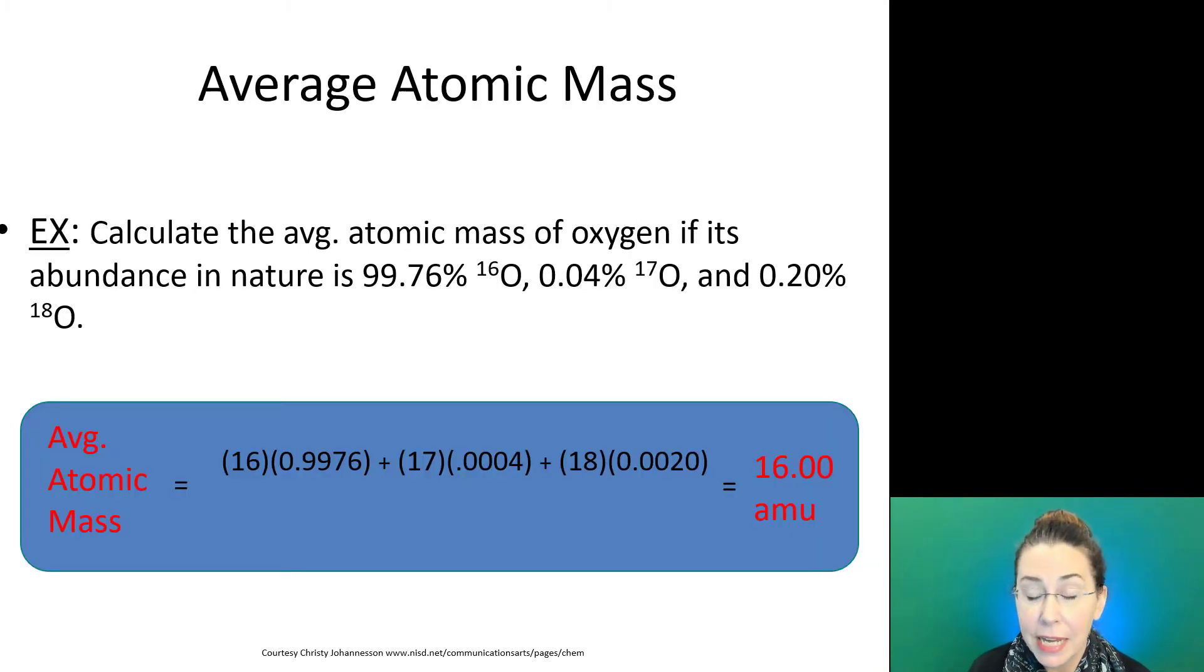And if I do that correctly, I'll get a value of 16.00 amu. So which of my isotopes is most abundant? Even if I didn't know that oxygen is 99.76% oxygen-16, seeing that I had 16 as my amu would help me arrive at that answer.